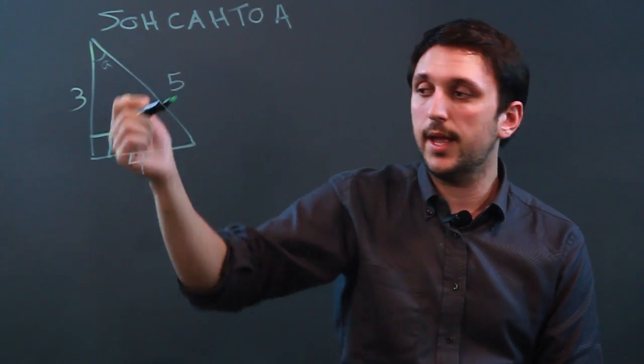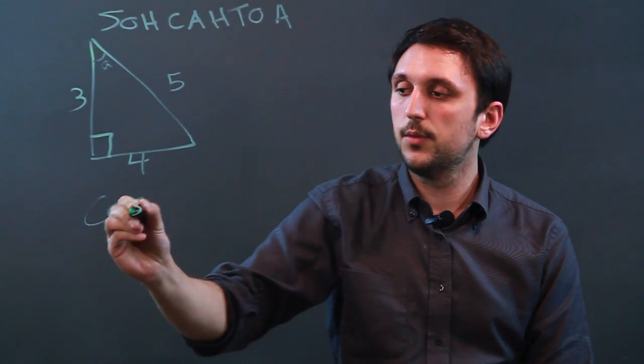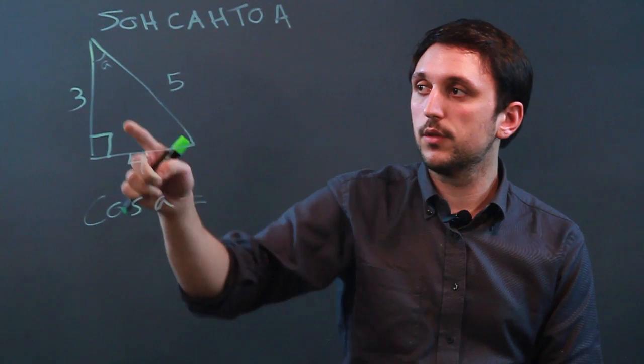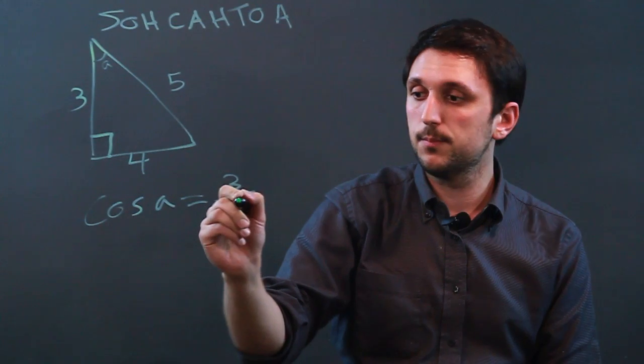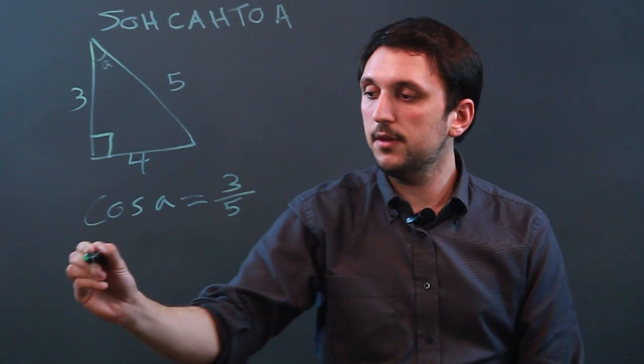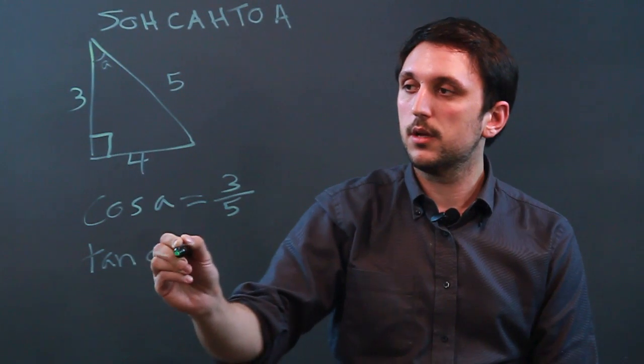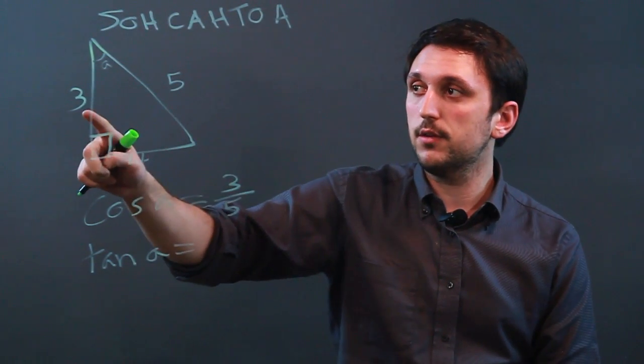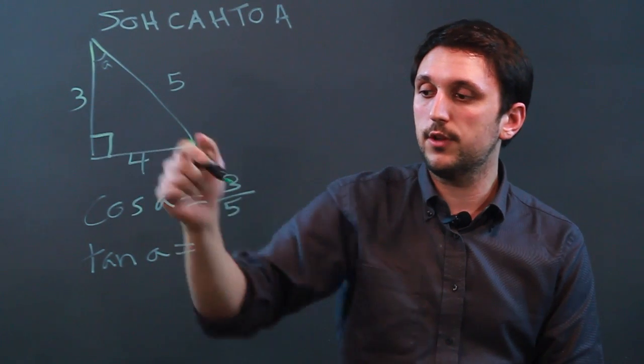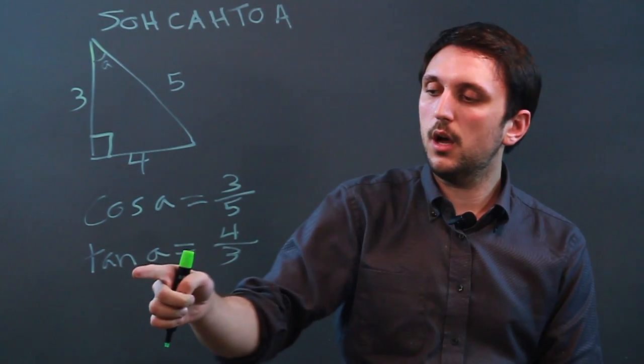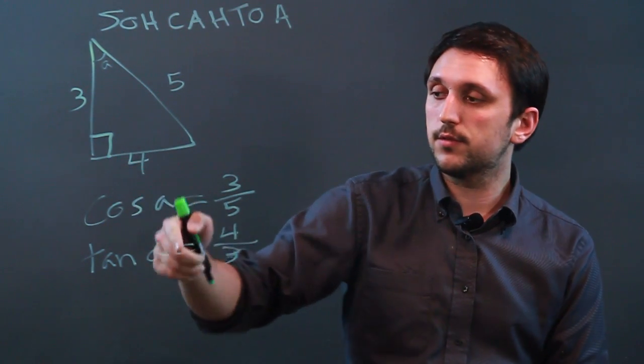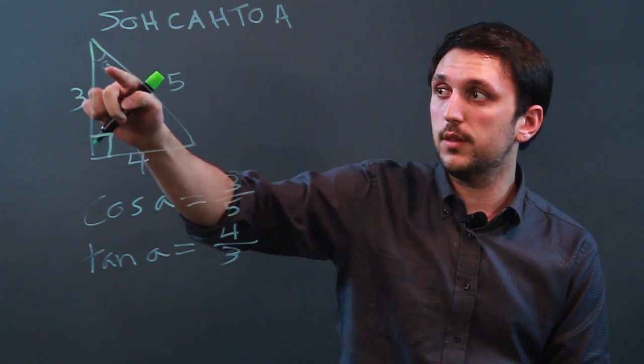So 3 over 5, and the tangent of A equals opposite over adjacent. So opposite is 4 and adjacent is 3. And then that's basically it for this. The sine would be, if we wanted to solve for it, the opposite over the hypotenuse, so 4 over 5.